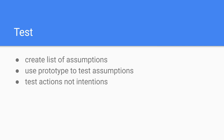When testing assumptions, you need to ask yourself: what do I want to measure? How do I want to measure it? When I am measuring, am I actually measuring what I want to measure? Will the results of my research be representative, reliable, and valid? It is real research.